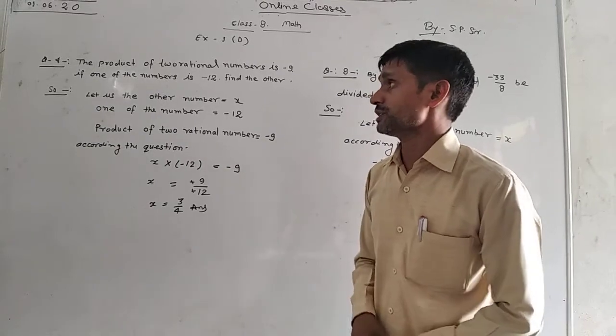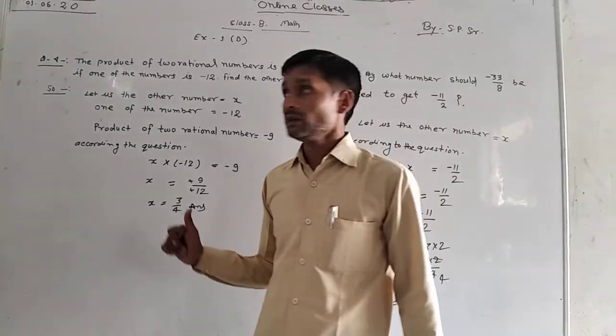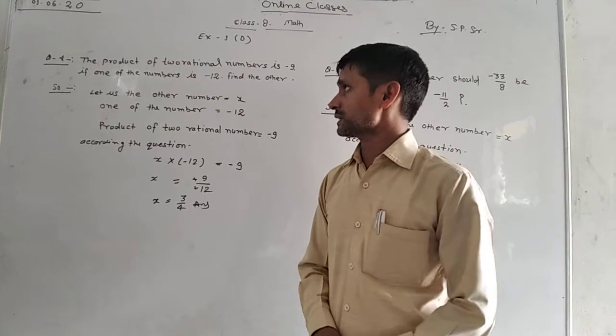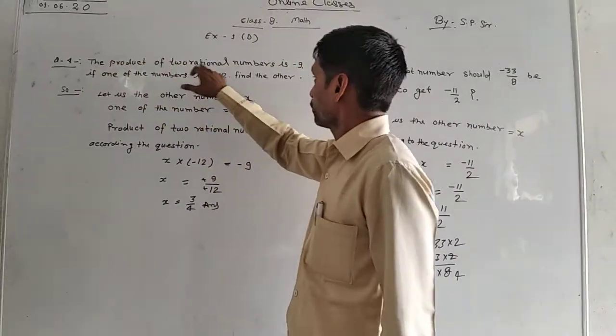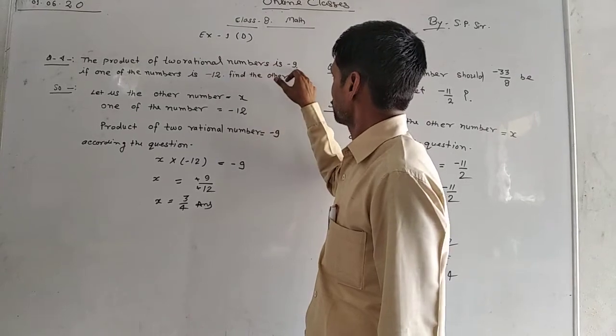We have question number four today. The product of two rational numbers is minus nine. If one of the numbers is given, we need to find the other.